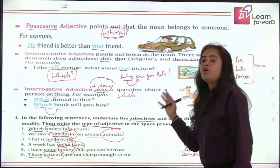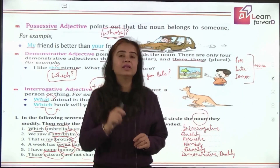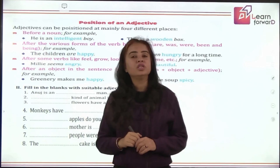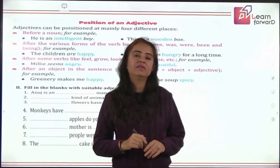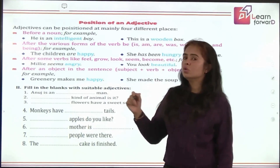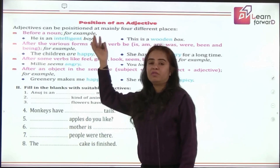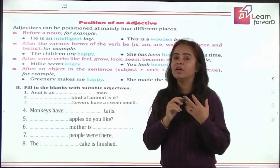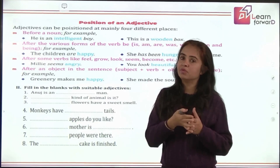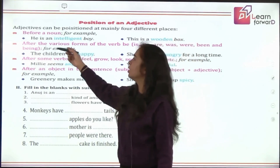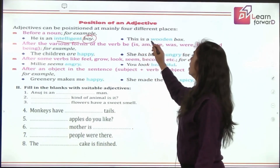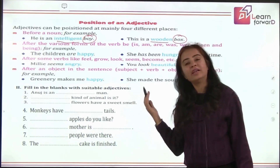With the explanation of all these sentences, I hope things are clearer to you now. Next, we'll be learning about the position of an adjective — where to write the adjective, what is its proper place. Adjectives can be written before a noun: demonstrative, interrogative, and possessive adjectives always have a noun after them. Other adjectives of quality can also come before a noun — 'He is an intelligent boy,' 'This is a wooden box.'